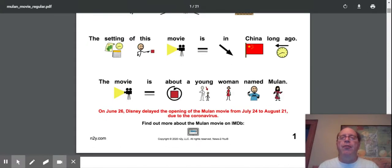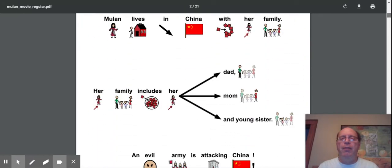The setting of this movie is in China a long, long ago. The movie is about a young woman named Mulan. Now they said in the red here on June 26, Disney delayed the opening of Mulan movie from July 24th to August 21st due to the coronavirus. Let's see what our next page has to say.